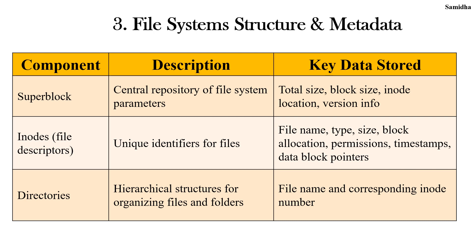Next is the structure of file system and metadata. The three main components are superblock, inodes and directories. The superblock is the central repository of a file system with crucial information like total size, block size, inode location and version information. Inodes are file descriptors — unique IDs for each file with details including file name, type, size, block allocation, permissions, timestamps and data block pointers.